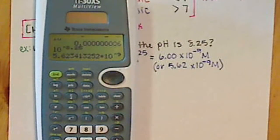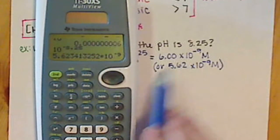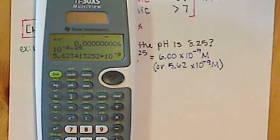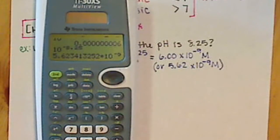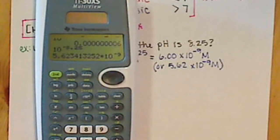When grading exams, I'm looking for the integrity of the number — especially that you have the correct power of ten and that your number is very close to what I'm looking for. That said, you still cannot put as many digits as you want; you still have to follow your sig fig rules. Just know that depending on your calculator and how many digits you can see, your numbers may be slightly different.